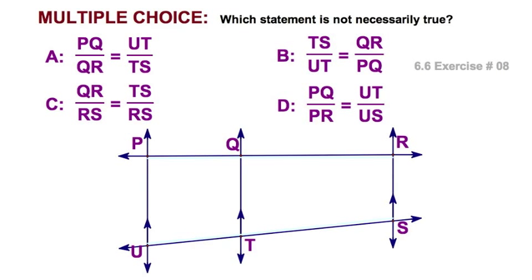Three parallel lines cut by transversals. So, let's see. Check these out one at a time. PQ is to UT as QR is to TS. That one looks good. I'll say, okay. How about this one? I've got TS is to UT. UT, oh, that's over here, as QR is to PQ. That's good.